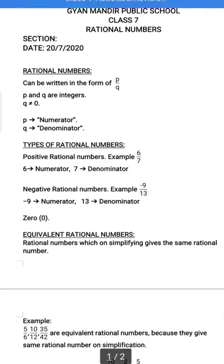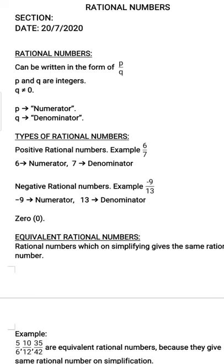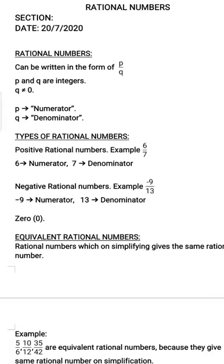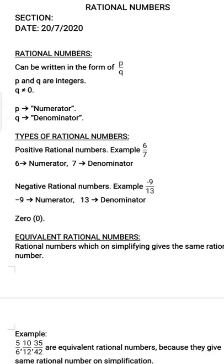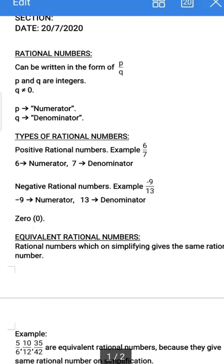The first type is positive rational numbers. For negative rational numbers, any one of the numerator or denominator can be negative — not both. If both are negative they cancel out. So if either the numerator or the denominator is negative, that means it is a negative rational number. Here my numerator is negative; the denominator could also be negative — for example, 9 upon minus 13 would also be a negative rational number. In this case, numerator is minus 9 and denominator is 13.